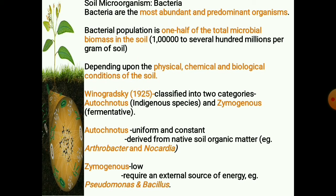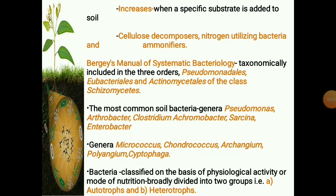Autochthonous bacterial population is uniform and constant in soil since their nutrition is derived from native soil organic matter — example: Arthrobacter and Nocardia. Whereas zymogenous bacterial population in the soil is low as they require an external source of energy — example: Pseudomonas and Bacillus. Population of zymogenous bacteria increases when a specific substrate is added to the soil. To this category belong the cellulose decomposers, nitrogen-utilizing bacteria, and the ammonifiers.